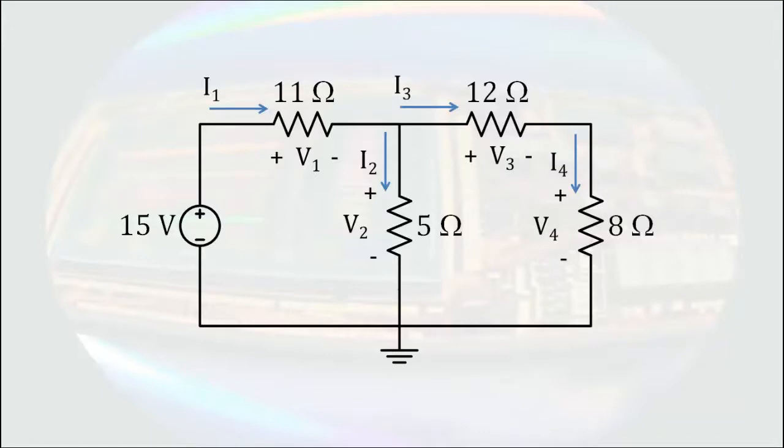Since the current from the source is also unknown, I can assign a variable to it also. In this case, because it is a source, the current will leave the positive terminal of the voltage source.